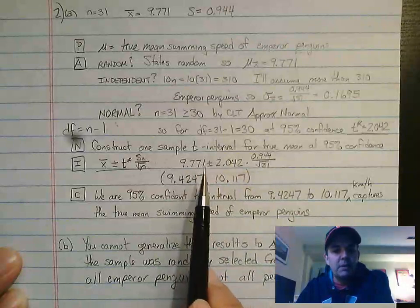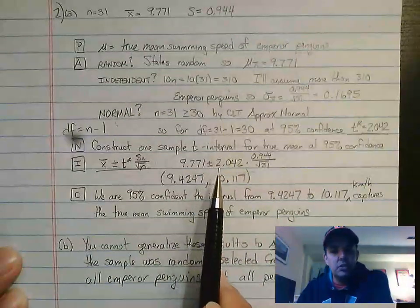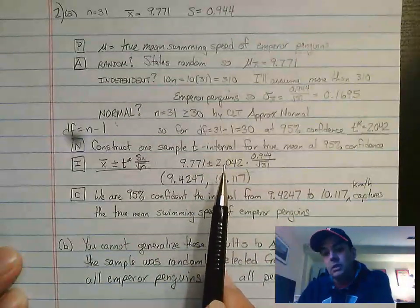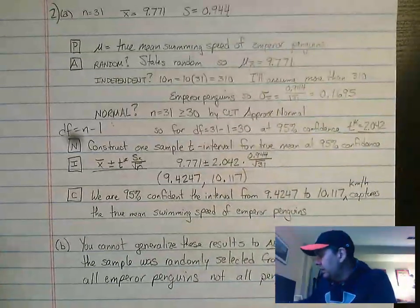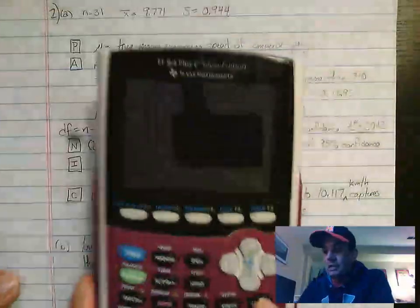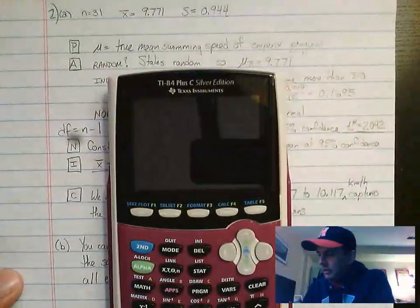Plugging in the numbers, 9.771 plus or minus 2.042, the critical value, times our standard error, 0.944 over the square root of 31. This is going to be a calculator thing. So we're going to go ahead with our calculator.